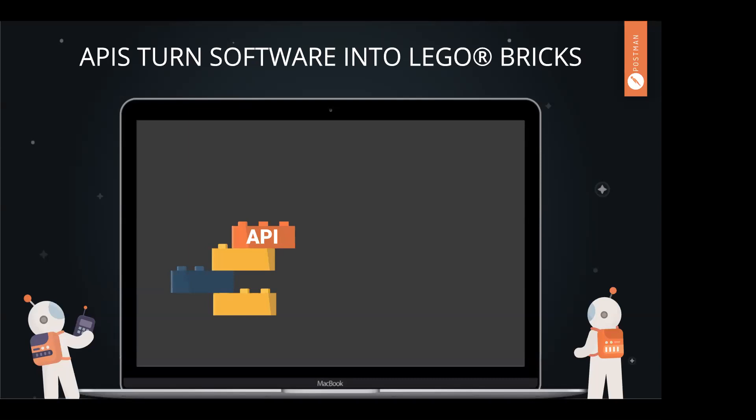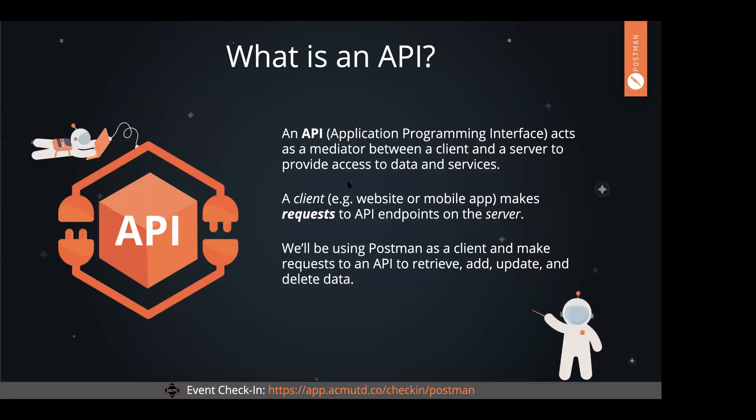If functions are the building blocks for applications, APIs are essentially the building blocks for third-party software. So to go back to what is an API: it acts as a middleman between your client and your server. For you as an end user, it gives you access to data on a third-party server. Postman is something you can use to make API calls really, really easily, and we're going to see how that happens.